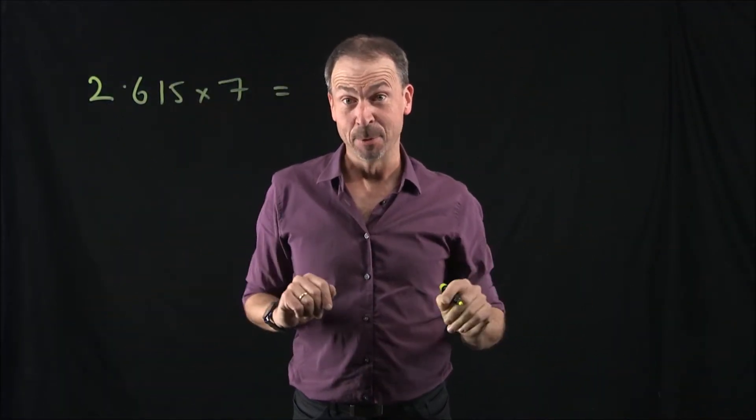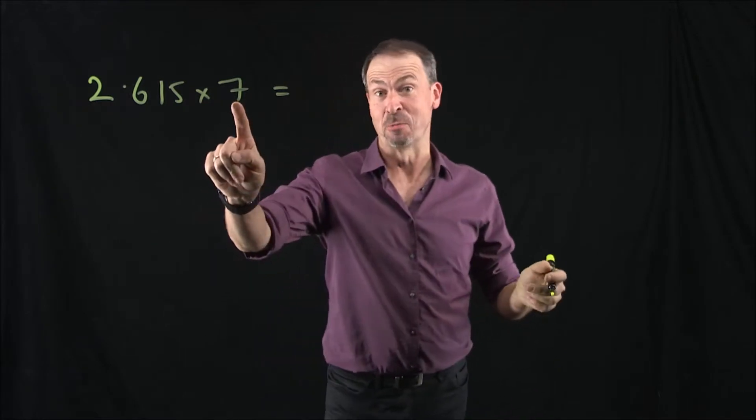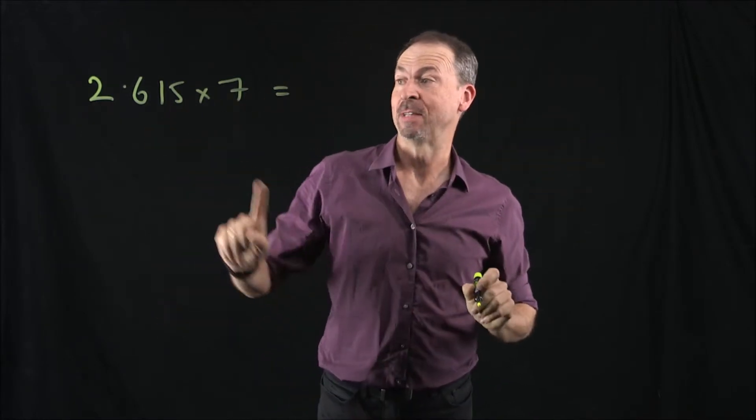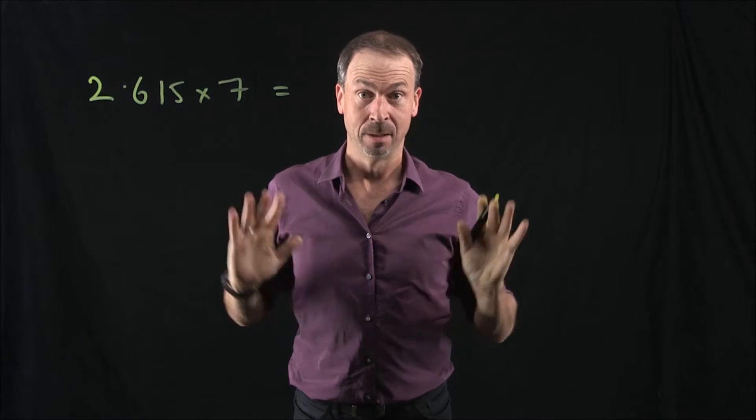Okay, can we do multiplication with decimals? Well, yes. I mean single digit multiplication is certainly straightforward. For example, look at 2.615 times 7. What is this?